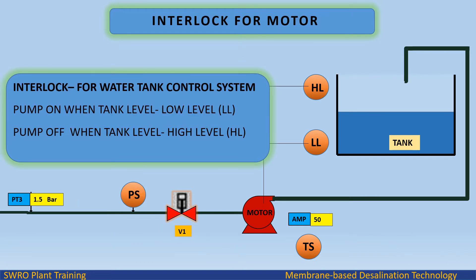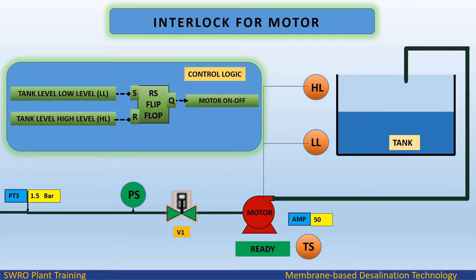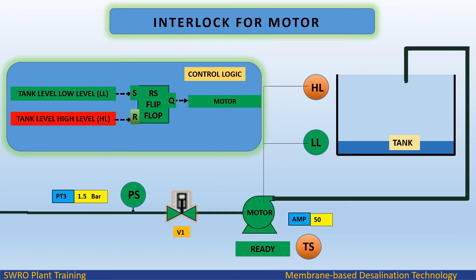Interlock for motor — interlock for water tank control system: pump on when tank level reaches low-low (LL); pump off when tank level reaches high level (HL). Control logic uses RS flip-flop set and reset. When tank level low is active, it sets the RS flip-flop and the motor turns on.